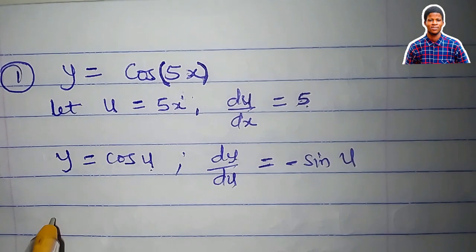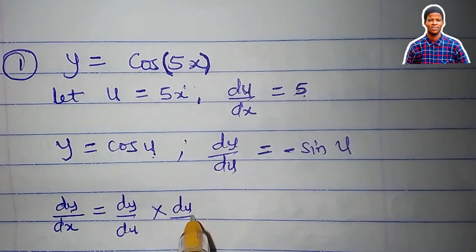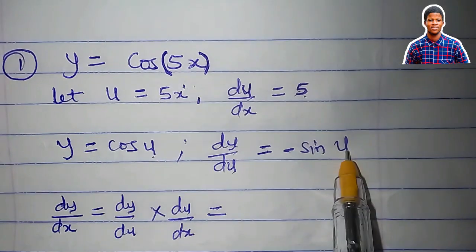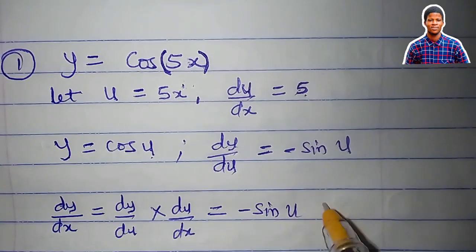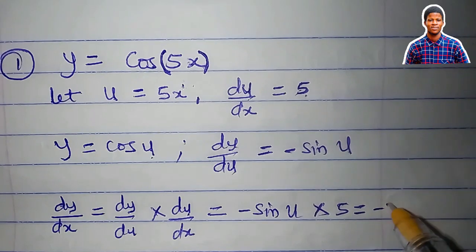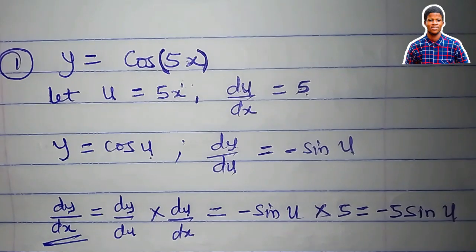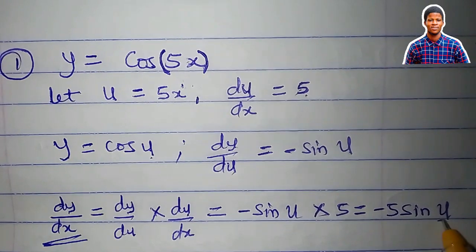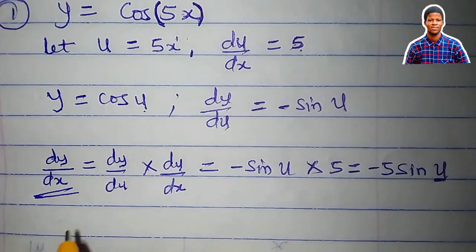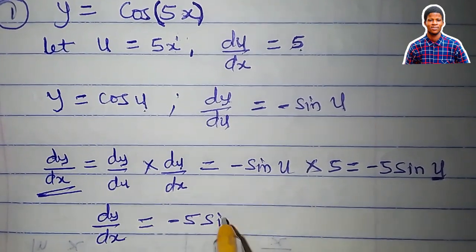Now I apply the chain rule formula: dy/dx = dy/du times du/dx. My dy/du is minus sin(u), and du/dx is 5. So dy/dx equals minus 5 sin(u). But since u = 5x, I substitute back: therefore dy/dx is equal to minus 5 sin(5x).